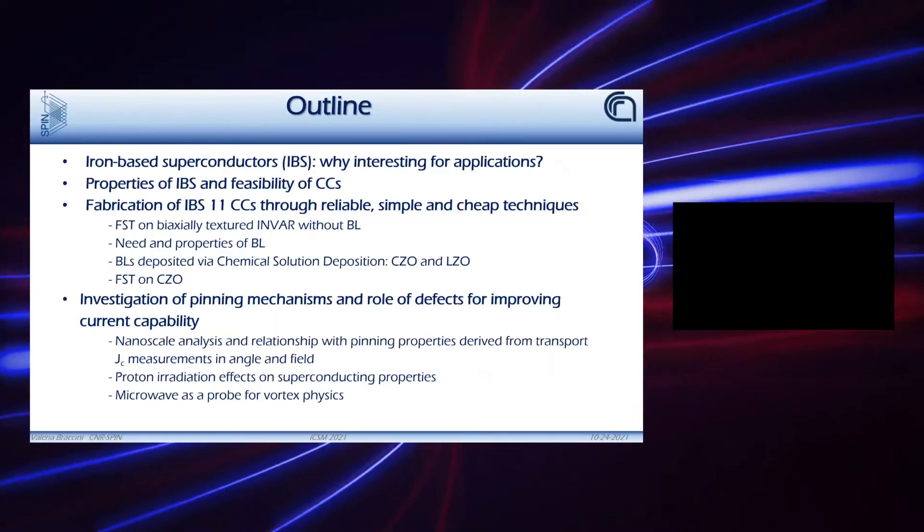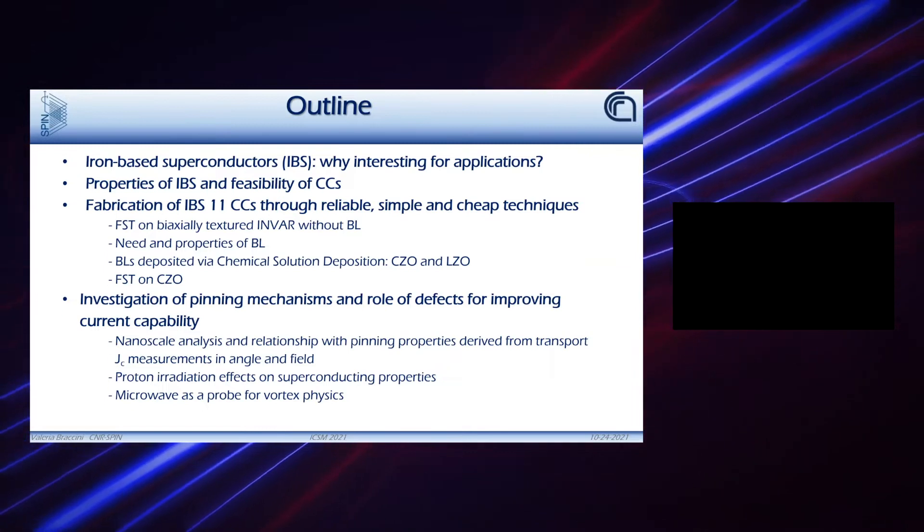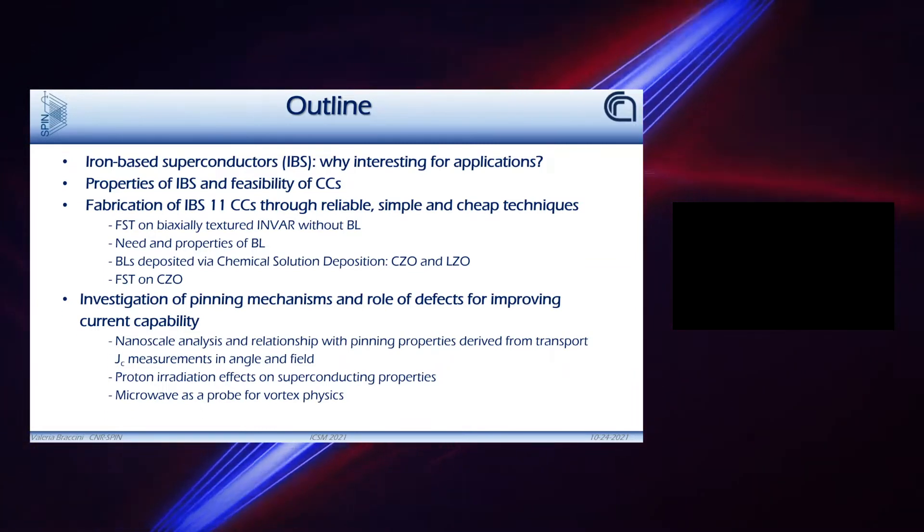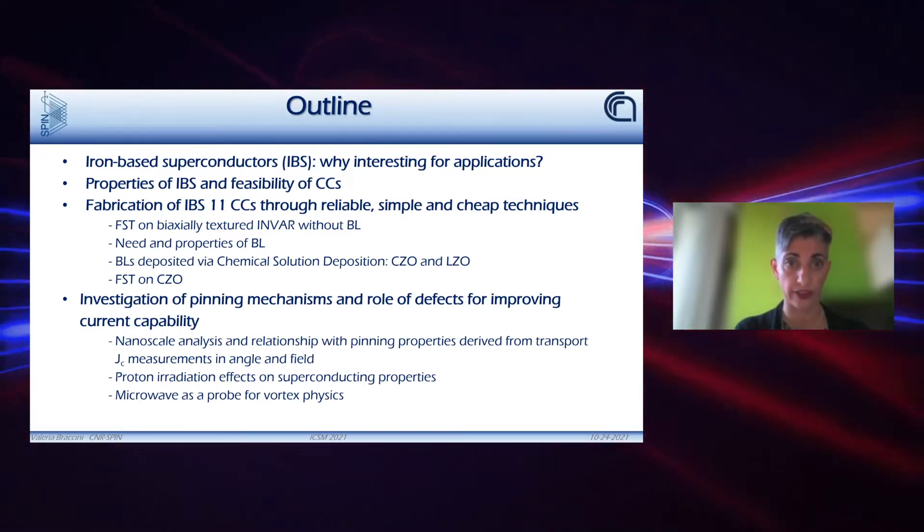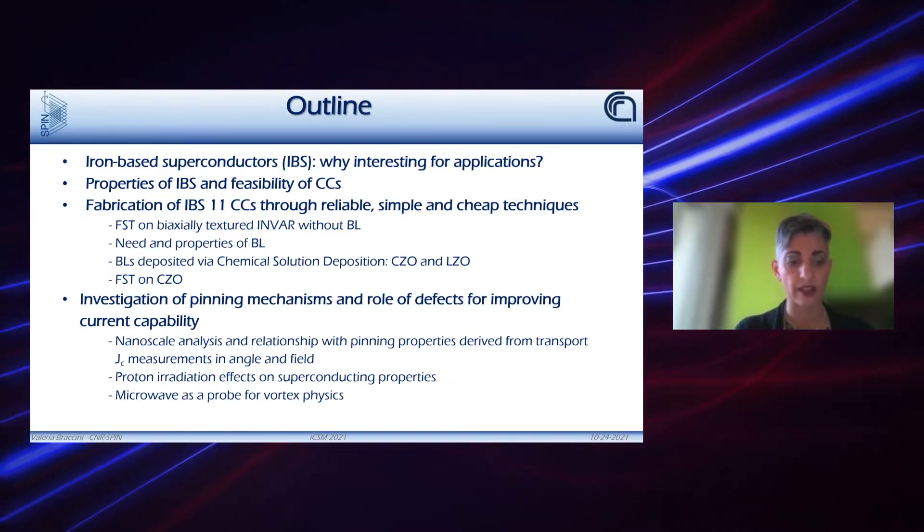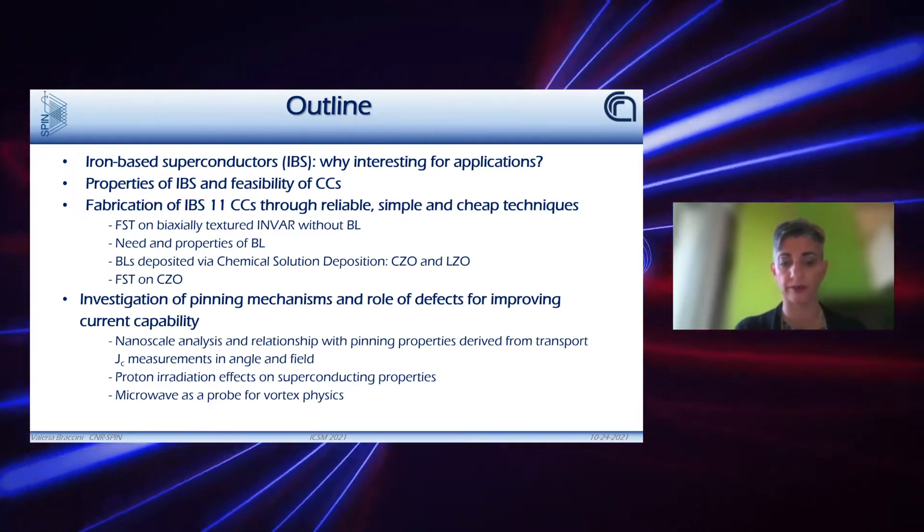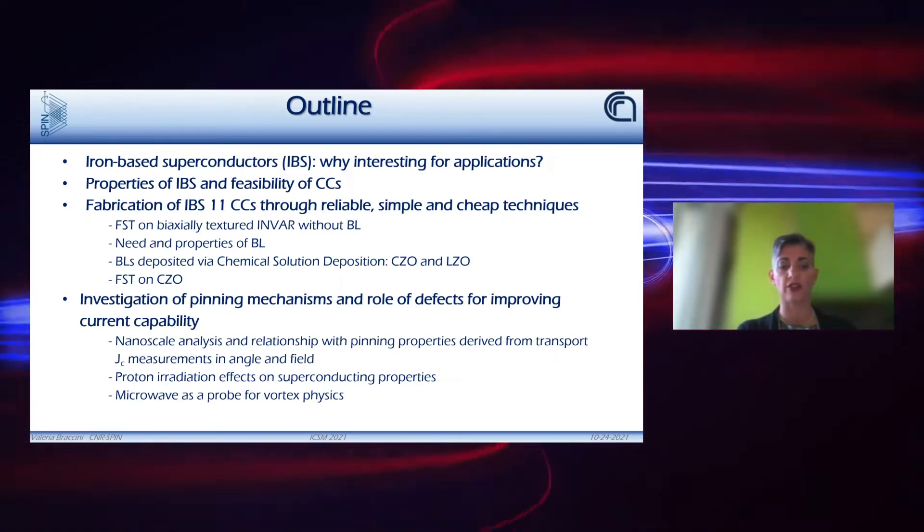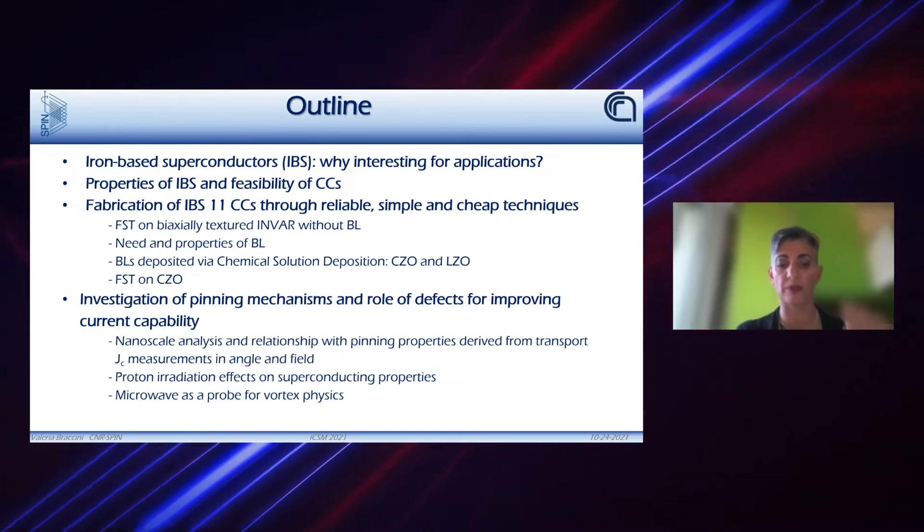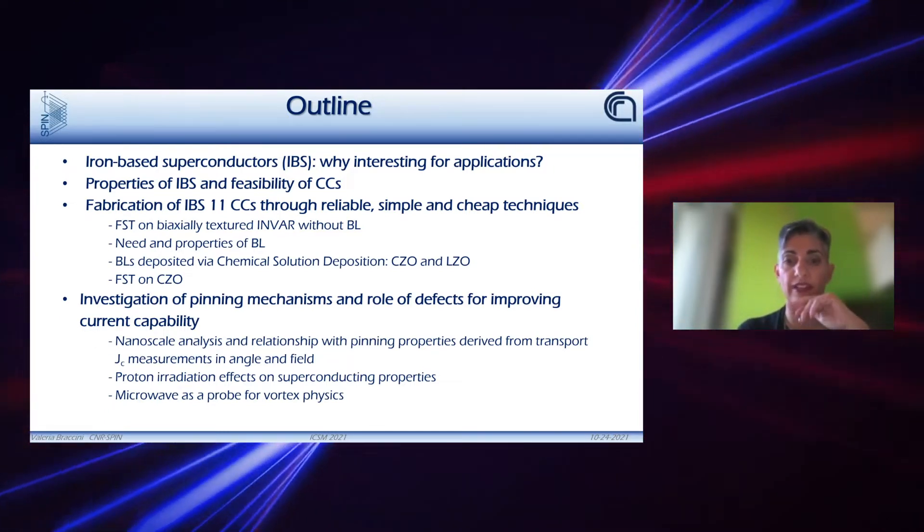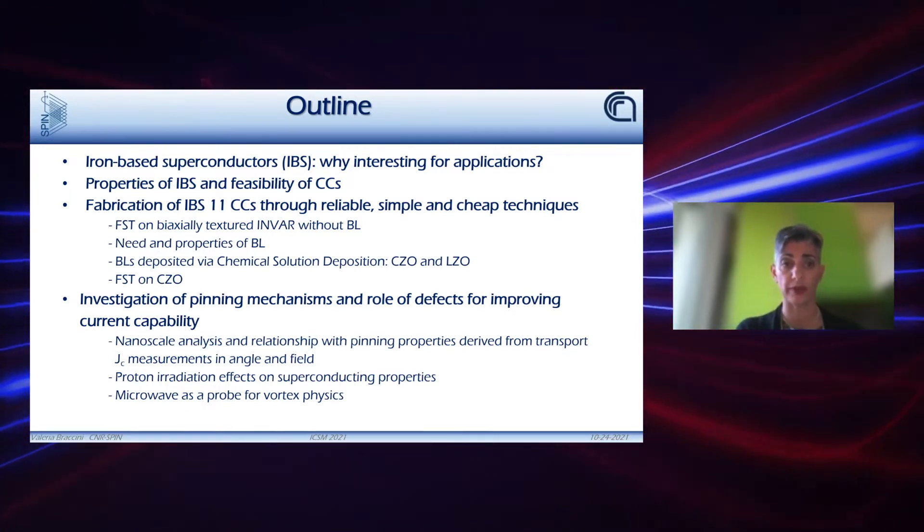This is the outline of my talk. I will briefly introduce the iron-based superconductors, why they can be interesting for applications, and I will discuss the feasibility of coated conductors, especially of the iron-selenium tellurium phase. I will then briefly describe our studies on different coated conductor templates, and then I will talk about the investigation of pinning mechanisms and the role of defects for improving the critical current capability of such materials.